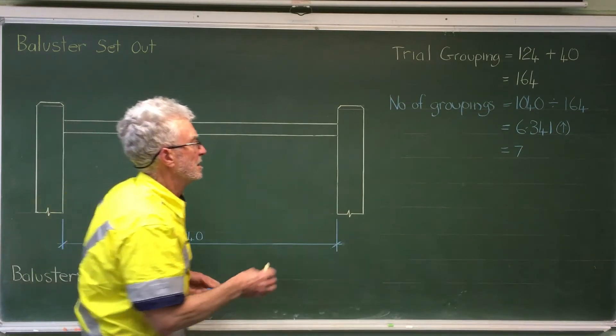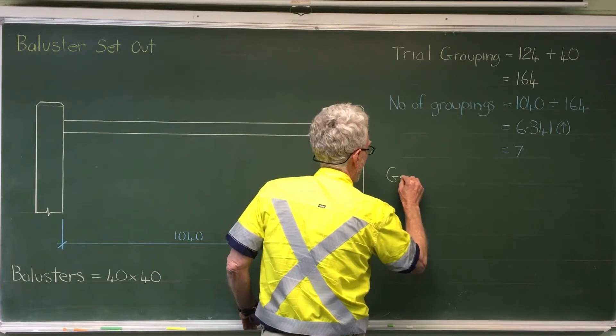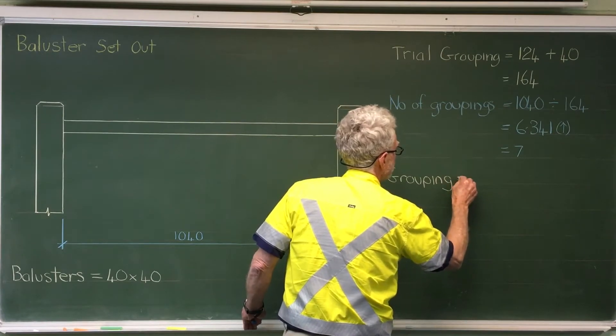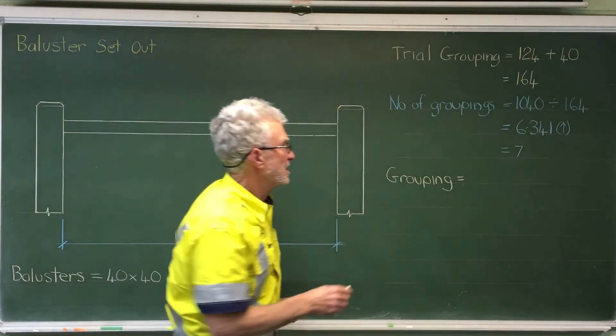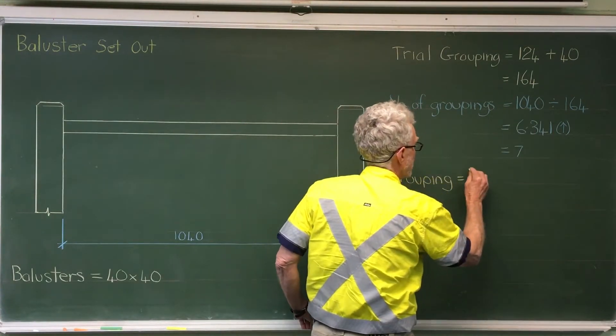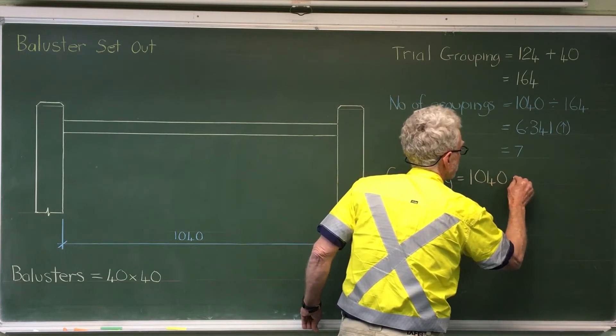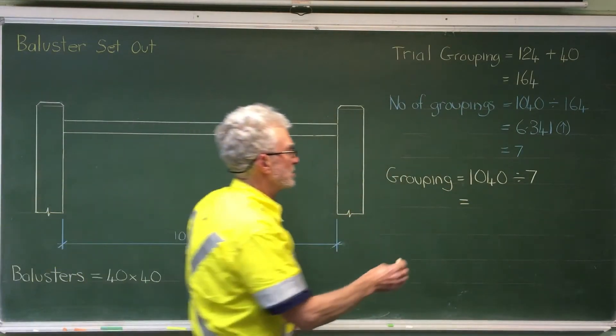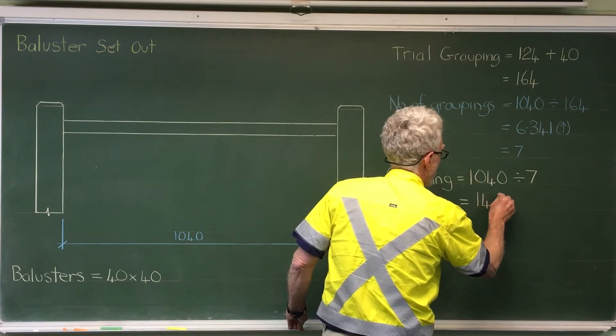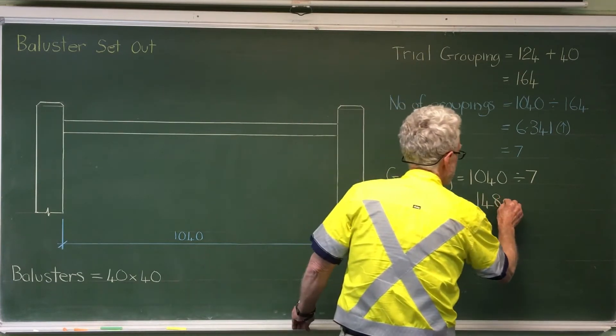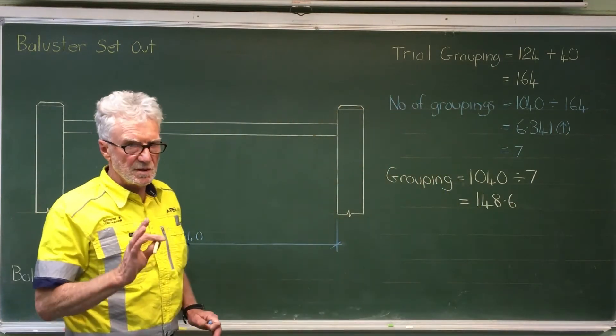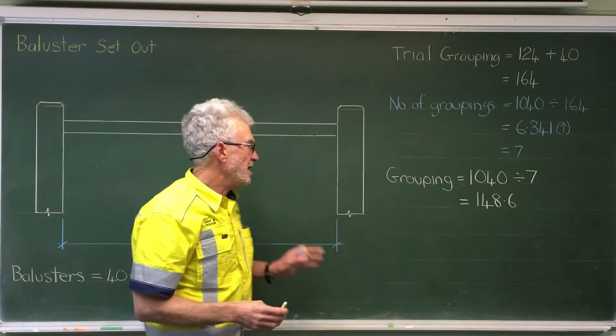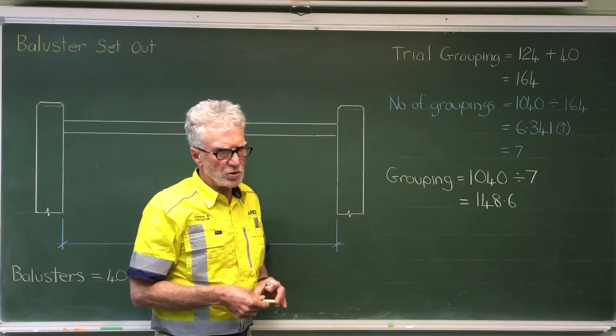So what would our grouping be? What we would try next is to divide the spacing by 7. Now this comes to 148.6. And I could, in this scenario, spread those out at that spacing. And if it was correct, we would end up with an even spacing. Like I said, this one's not going to work, but we'll try it anyway.